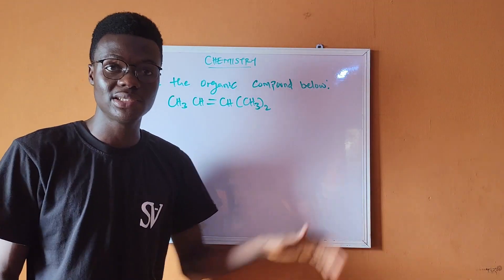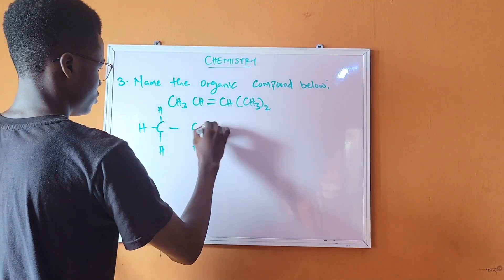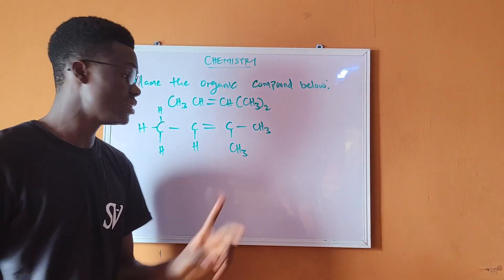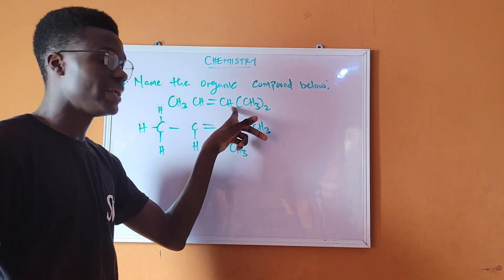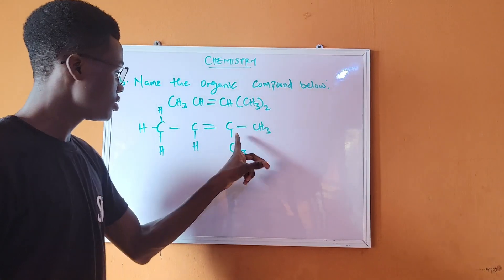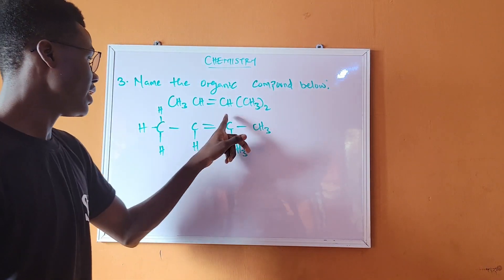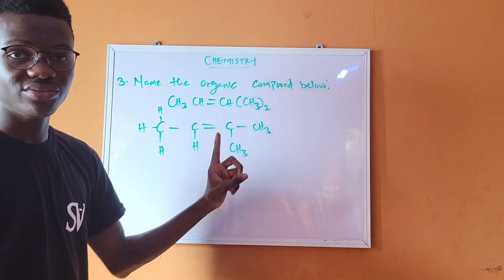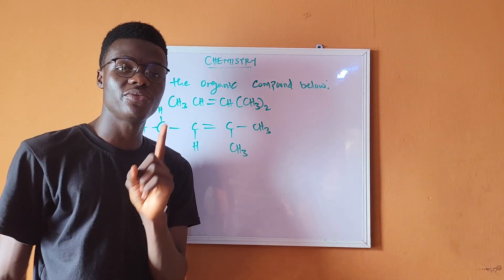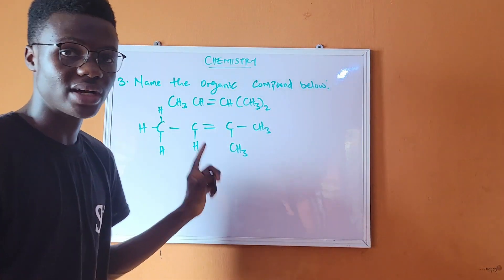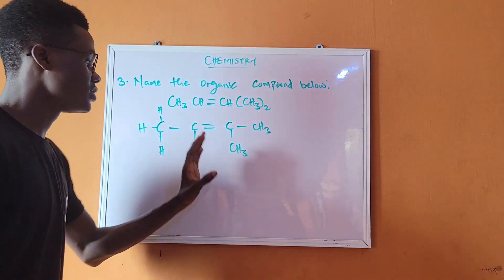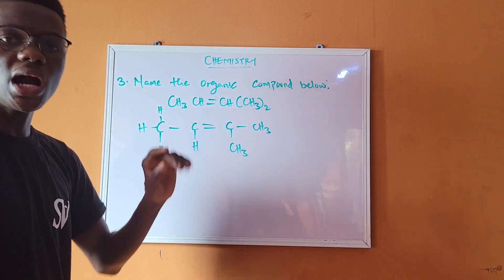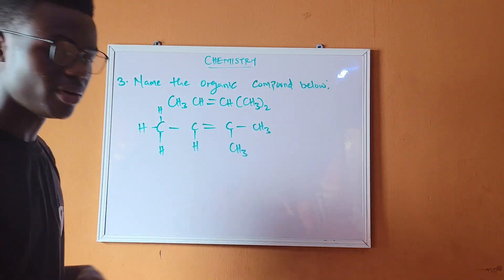The next question: name the organic compound shown. Let's expand the structure first. There is a mistake in the question — an extra hydrogen that would give carbon five bonds, which is wrong. The maximum number of bonds around carbon is four, so we correct the structure accordingly.